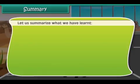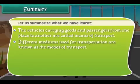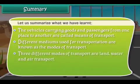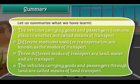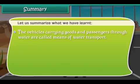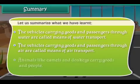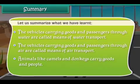Summary: The vehicles carrying goods and passengers from one place to another are called means of transport. Different mediums used for transportation are known as the modes of transport. The three different modes of transport are land, water and air transport. The vehicles carrying goods and passengers through water are called means of water transport, and those through air are called means of air transport. Animals like camels and donkeys also carry goods and people.